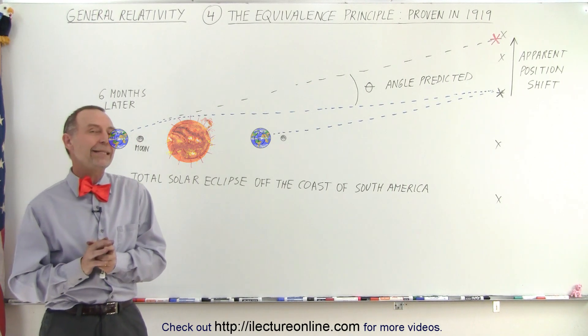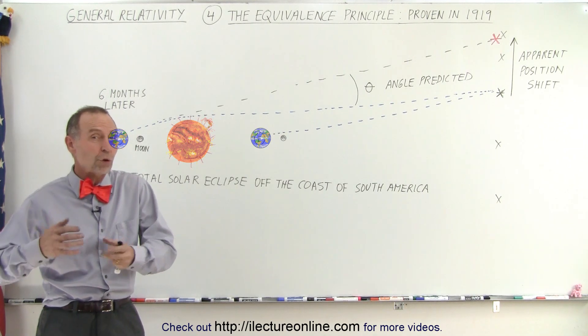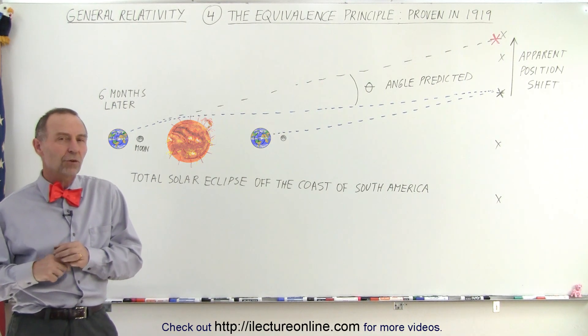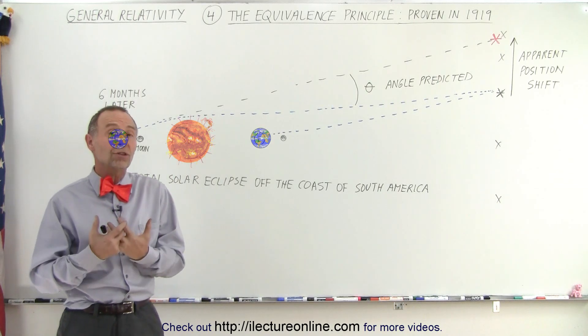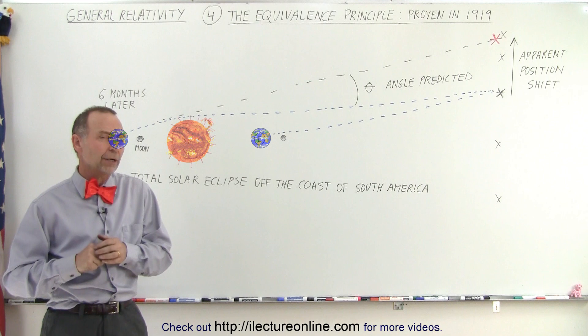So what happened in 1919 was that there was a total solar eclipse that was going to occur off the coast of South America. So they got an expedition together, chartered a boat, and traveled down to the coast of South America.